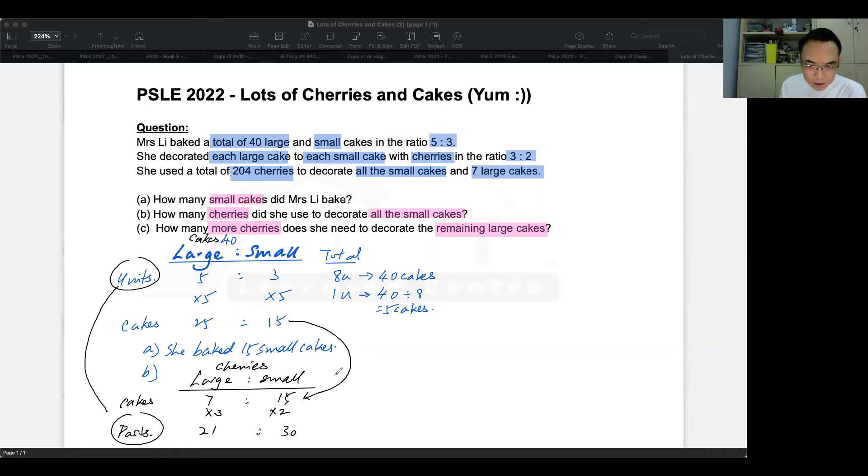So we have a total just like what we did above of 21 plus 30. And I got 51 parts. So this 51 parts represents all the cherries used, which was 204. So now I find one part. And if this number is not divisible, it probably means that you got it wrong. What does this mean? It means that one part in this ratio represents four cherries.